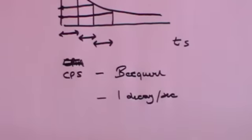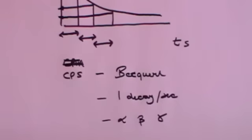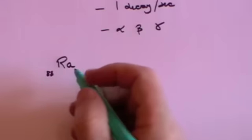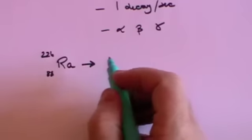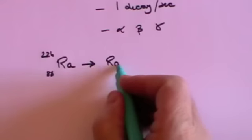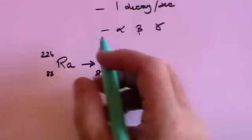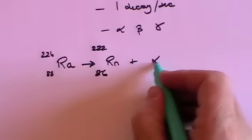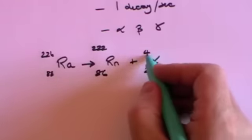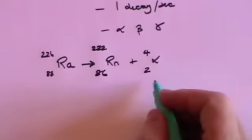And this can measure alpha, beta or gamma emissions so a becquerel is one emission per second. Just to give you some idea of what might be causing this let's take for example radium which has 88 protons and 226 protons and neutrons that is unstable and decays into the gas radon which has 86 protons and 222 protons and neutrons plus an alpha particle which has 2 protons and 4 protons and neutrons.